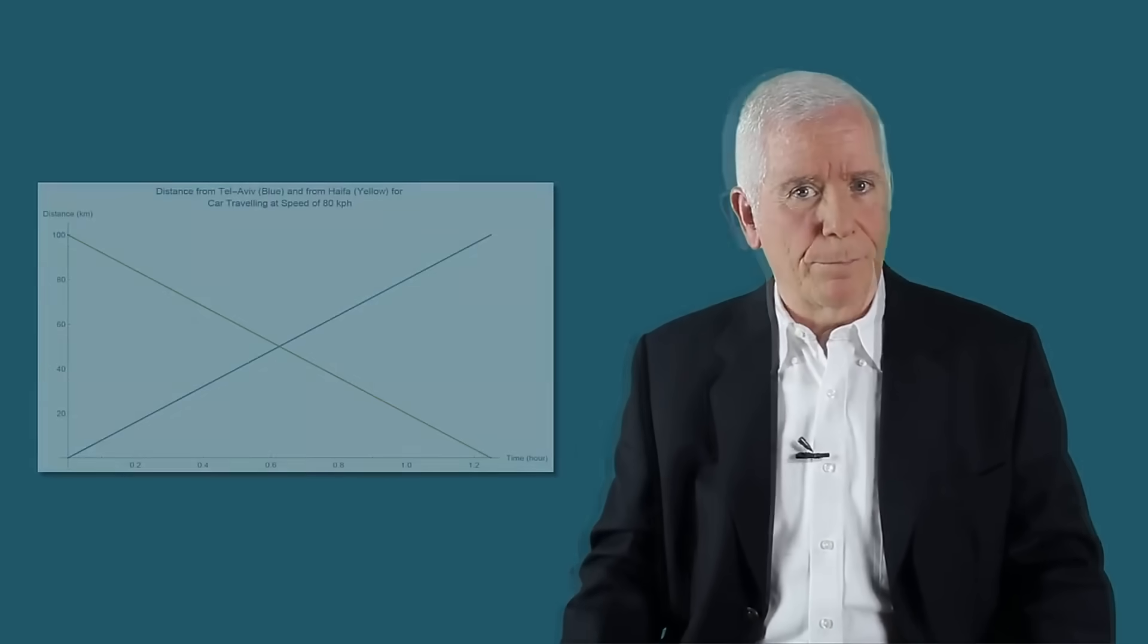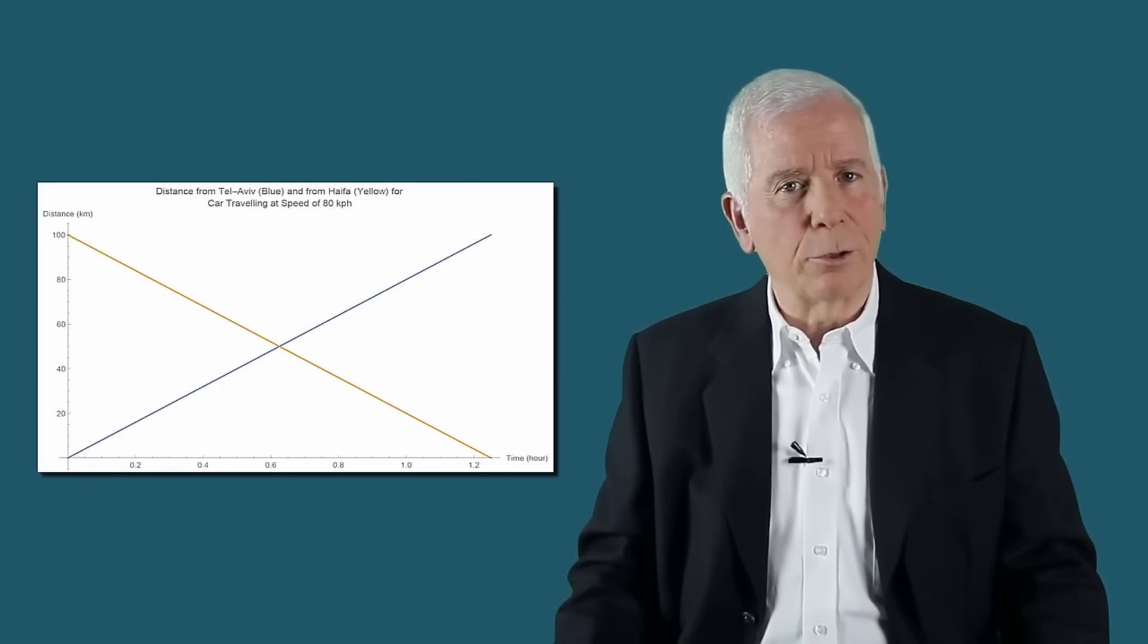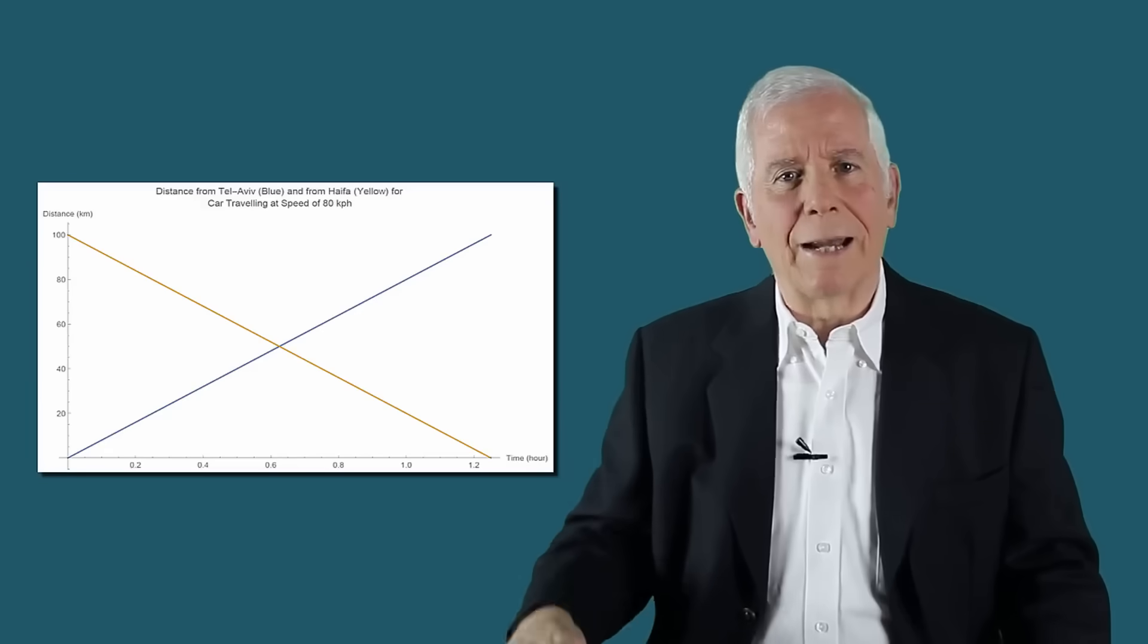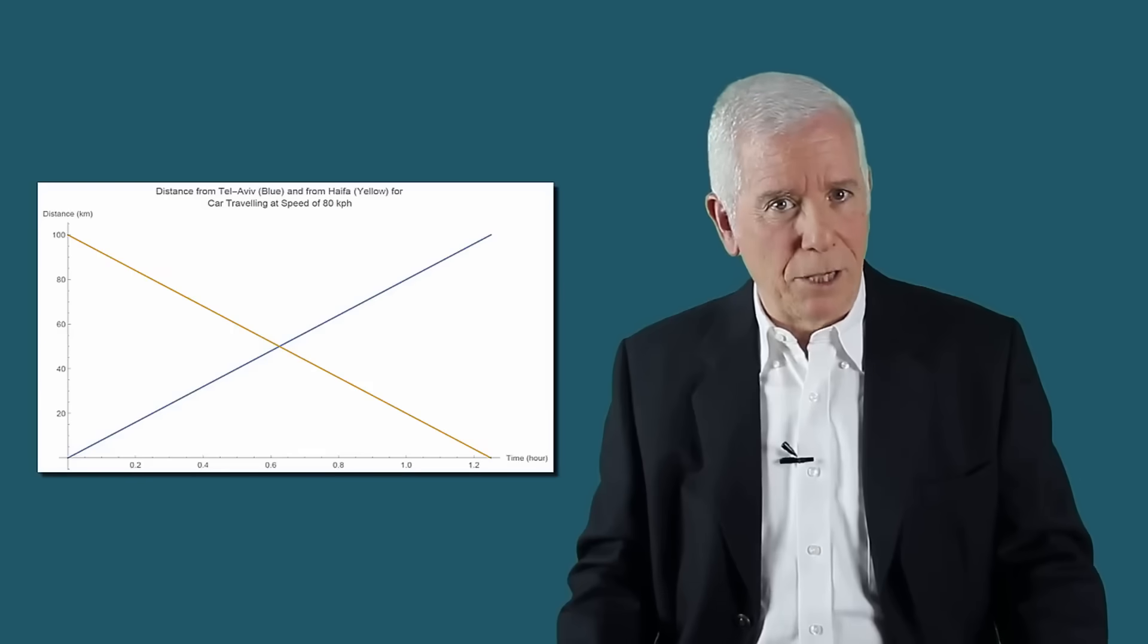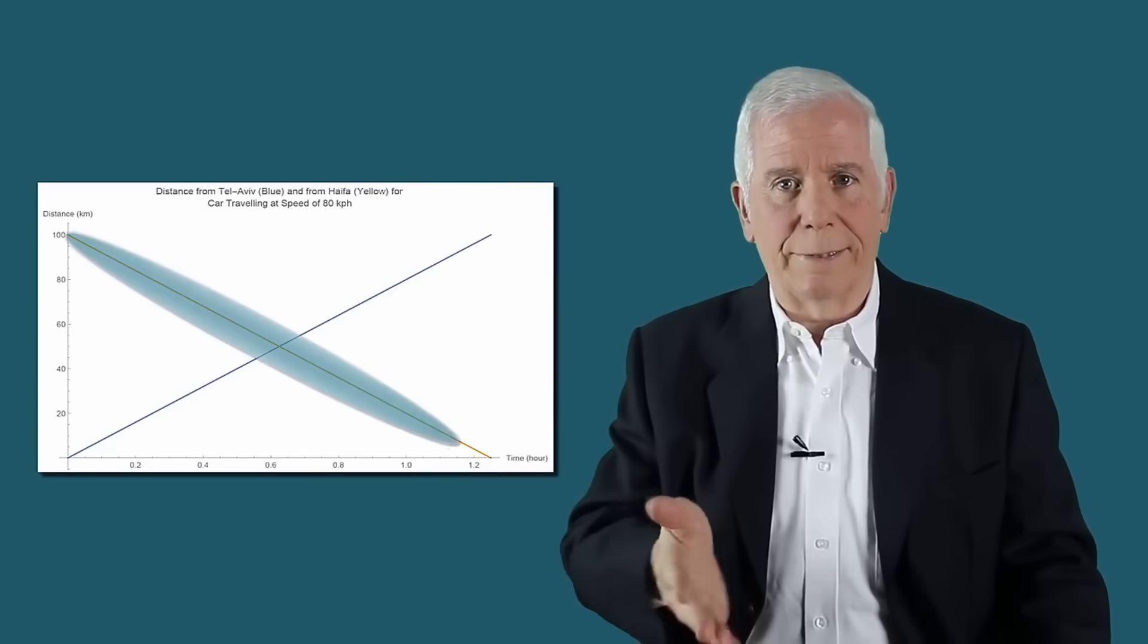This is true irrespective of whether the straight line is ascending or descending. For example, if I wish to determine the location as function of travel time of a car traveling at a constant speed from Tel Aviv to Haifa relative to its starting point, the line will be ascending. If the measurement will be relative to the destination, namely Haifa, the line will go down, descending.